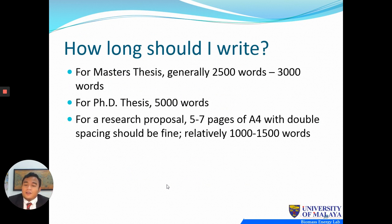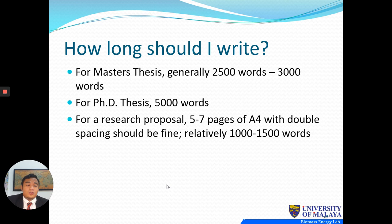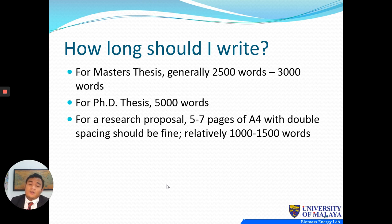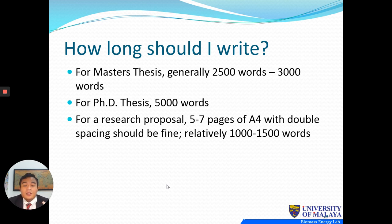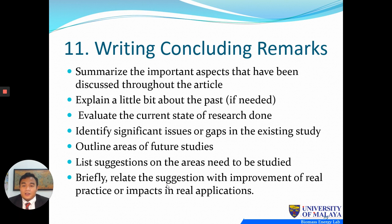How long should the literature review be? For a master's thesis, generally 2,500 to 3,000 words. For a PhD thesis, 5,000 words. For a research proposal, it should be short — 5 to 7 pages of A4 with double spacing, roughly 1,000 to 1,500 words. However, you should always refer to your supervisor and university, as different universities have different requirements.